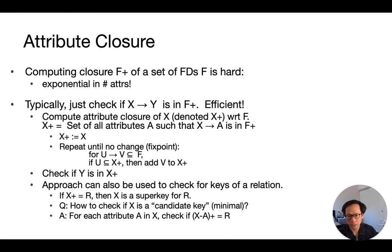But what about checking if X is a candidate key for R? In other words, if it is minimal. This turns out to be fairly simple as well. For each attribute A that is in X, we will remove it from X one attribute at a time and check to see if X minus A plus equals to R. If none of the X minus A plus actually equals to R, then that means that every attribute in X is actually necessary in order for it to form a key for R. Hence X is minimal.